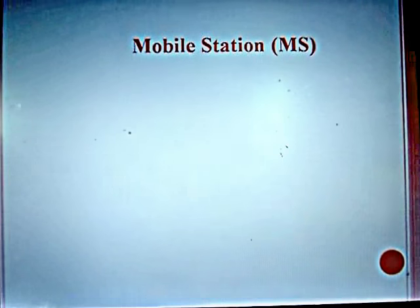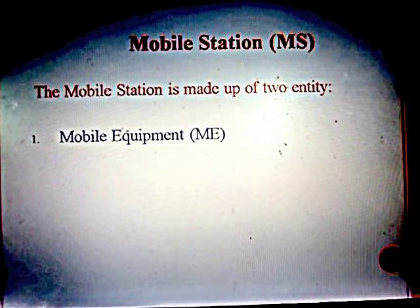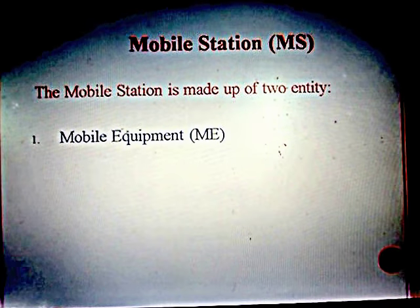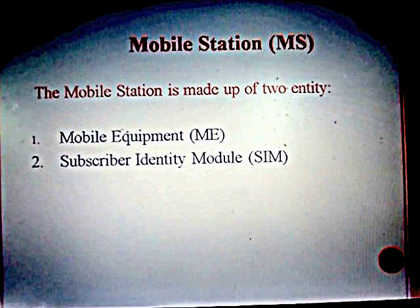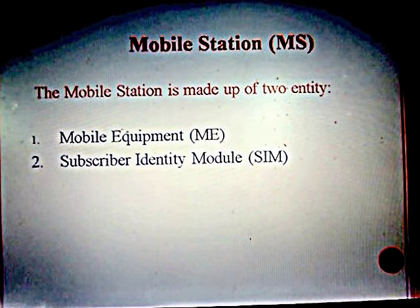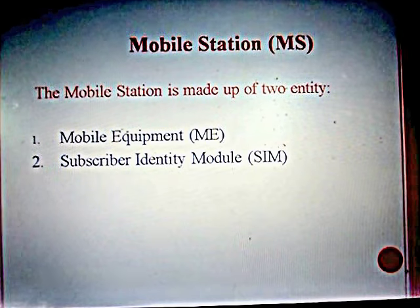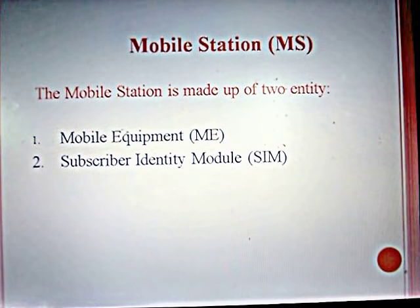Cellular or GSM Architecture is divided into four segments: Mobile Set, Base Station Subsystem, Network Switching Subsystem (NSS), and Operation and Maintenance Subsystem. The first segment is known as Mobile Set. Mobile Station or Mobile Set is made up of two entities.